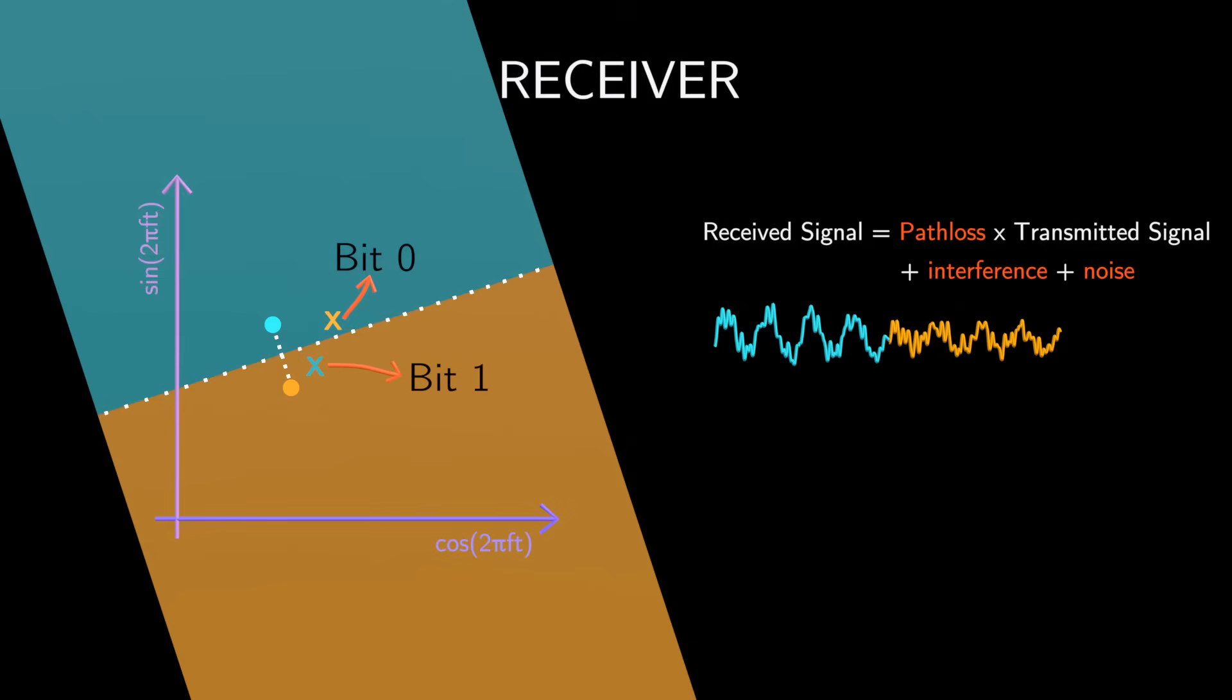To reduce the probability of incorrect decoding, the transmitter spreads the constellation points as far apart as possible. But there's a catch.